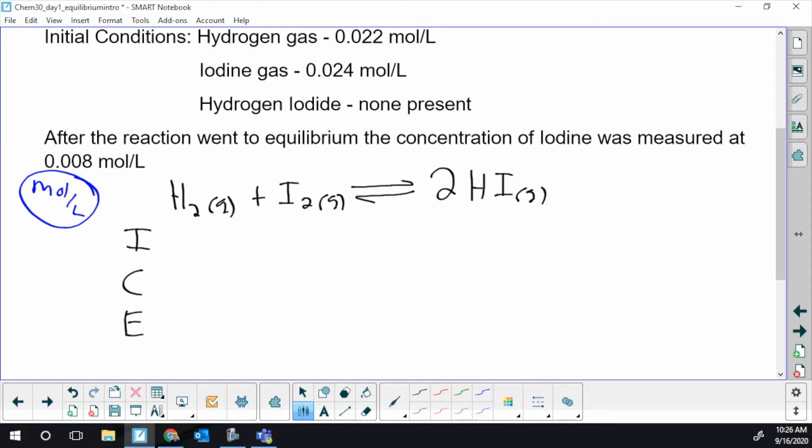Initial conditions: hydrogen gas 0.022 or 22 millimoles per liter, iodine gas 24 millimoles, 0.024 moles per liter, hydrogen iodide gas 0. I'm going to start leaving this out - if you're not told about a product at the beginning, you're going to assume it's zero. After the reaction went to equilibrium, the concentration of iodine was 8 millimoles per liter, 0.008 moles per liter. That uses up all the given data.